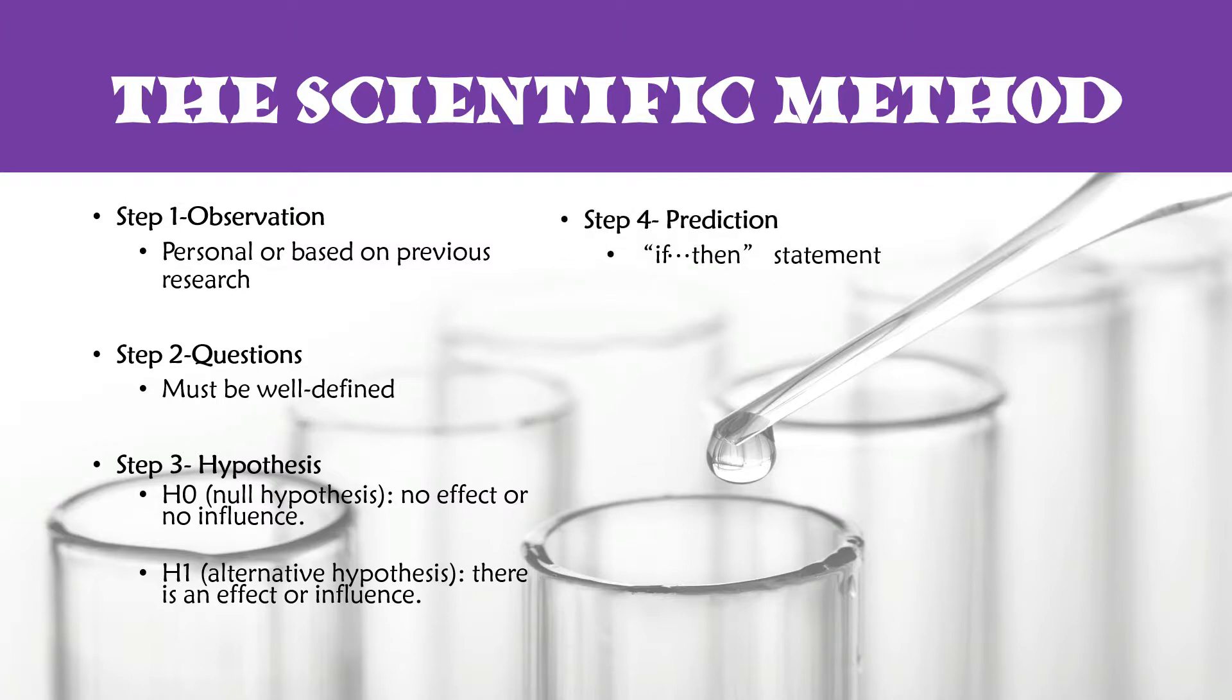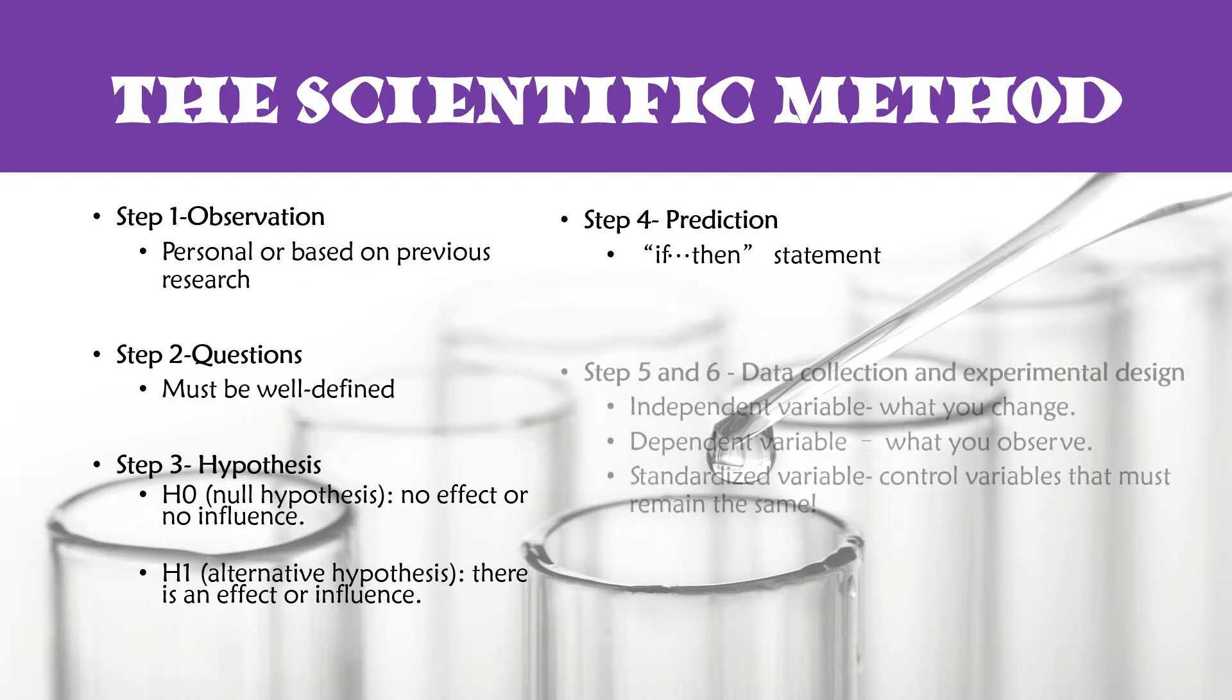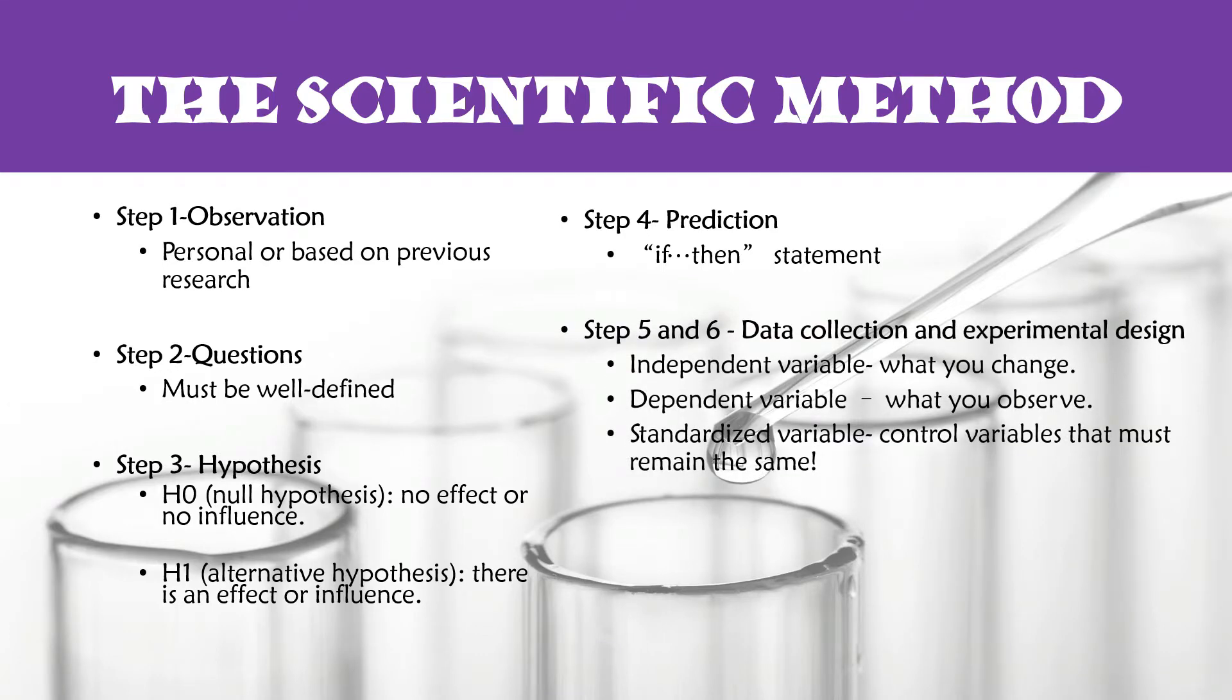Now step four, once you have your hypothesis, you need to make a prediction. It is in essence an a priori answer to your hypothesis. Most people tend to get these mixed up because they do coincide with one another, but your prediction is not your hypothesis. The prediction is your a priori answer to your own hypothesis, generally written in if-then statements. So once you have come up with your hypothesis, your question, and your prediction, you can then move on to steps five and six.